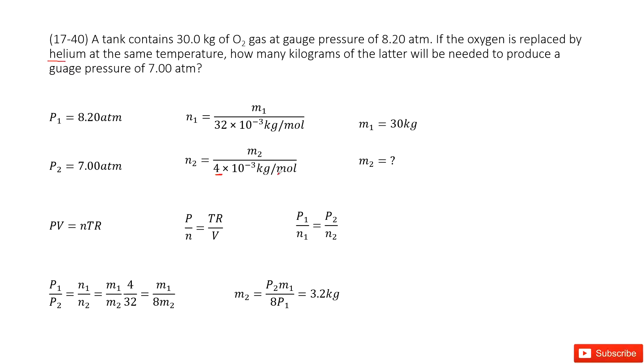Now can we find the mass? Yes, we can use the ideal gas law PV equals nTR. We can write it as P over n equals TR divided by V. The temperature is constant, R is a constant, and the volume V is constant for this container. Therefore, P over n equals a constant.